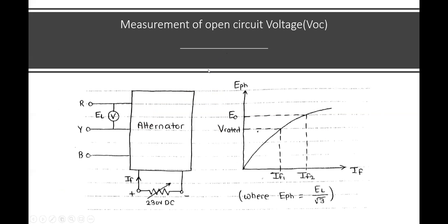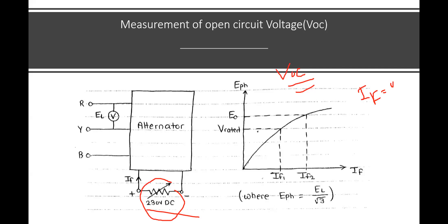To calculate VOC — open circuit voltage — the alternator is given a 230-volt DC supply for field excitation. The procedure is: first maintain field current equal to zero. This is the OCC — open circuit characteristics — which you already learned in DC machines. Initially there is no excitation on the alternator; then start the alternator under open circuit and slowly increase the value of field current.